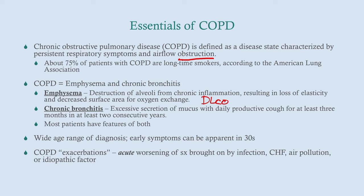There is a wide age range of diagnosis — it depends on how frequently they smoked and the age they started. Early symptoms can be apparent in their 30s, but most of the time this doesn't get diagnosed until their late 40s, 50s, or early 60s. COPD exacerbations — not the topic of this talk — is an acute worsening of symptoms, often brought on by infection, congestive heart failure, air pollution, or some idiopathic factor. It's technically defined as an increase in dyspnea from baseline and/or an increase in sputum production.